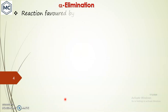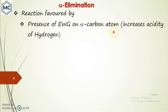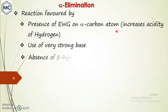Alpha elimination is usually favored by the presence of an electron-withdrawing group on the alpha carbon atom, which increases the acidity of the hydrogen. Use of a very strong base is also required. Another important point: absence of beta hydrogen — if you have a beta hydrogen, there is a possibility of elimination of hydrogen from the beta carbon instead.